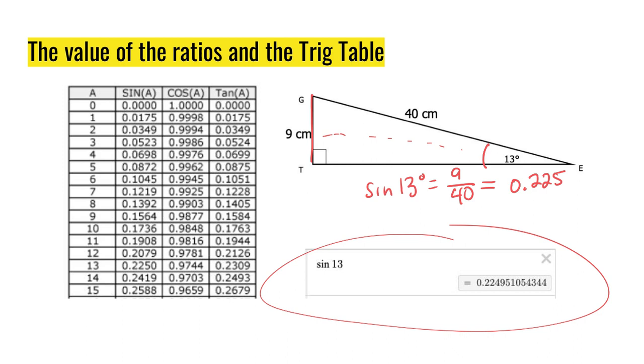I get 0.22495, which rounds to 0.225. On the table, I've got the sine of 13 degrees, 0.2250. This is the same regardless of how we're approaching it.